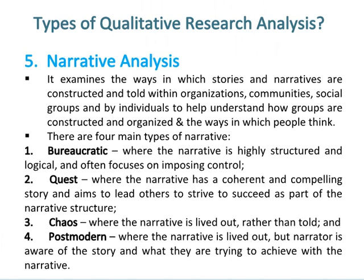Number 1 is bureaucratic, where the narrative is highly structured and logical and often focuses on imposing control. Number 2 is quest, where the narrative has a coherent and compelling story and aims to lead others to strive to succeed as part of the narrative structure. Number 3 is chaos, where the narrative is lived out rather than told. And Number 4 is post-modern, where the narrative is lived out but the narrator is aware of the story and what they are trying to achieve with the narrative.